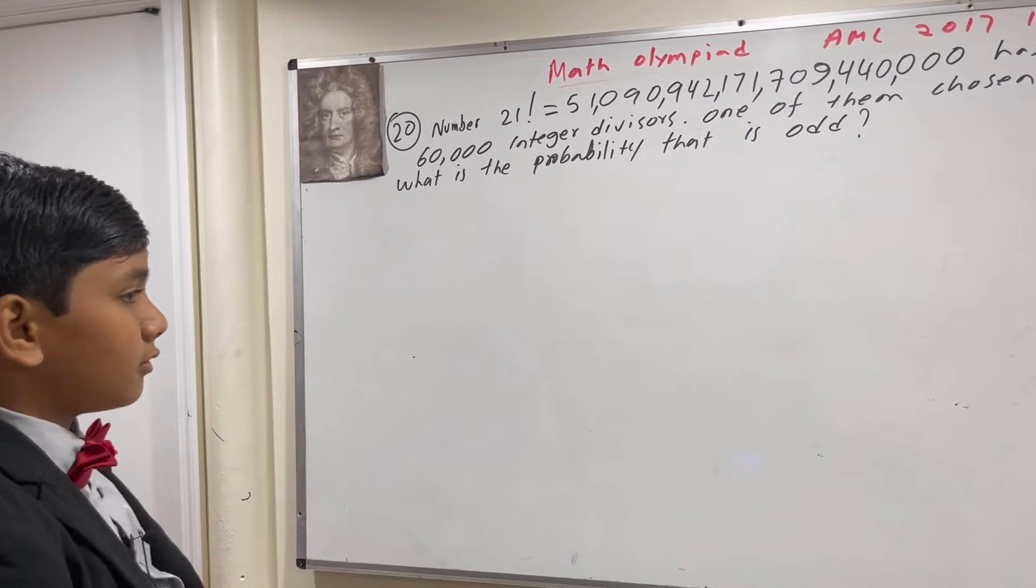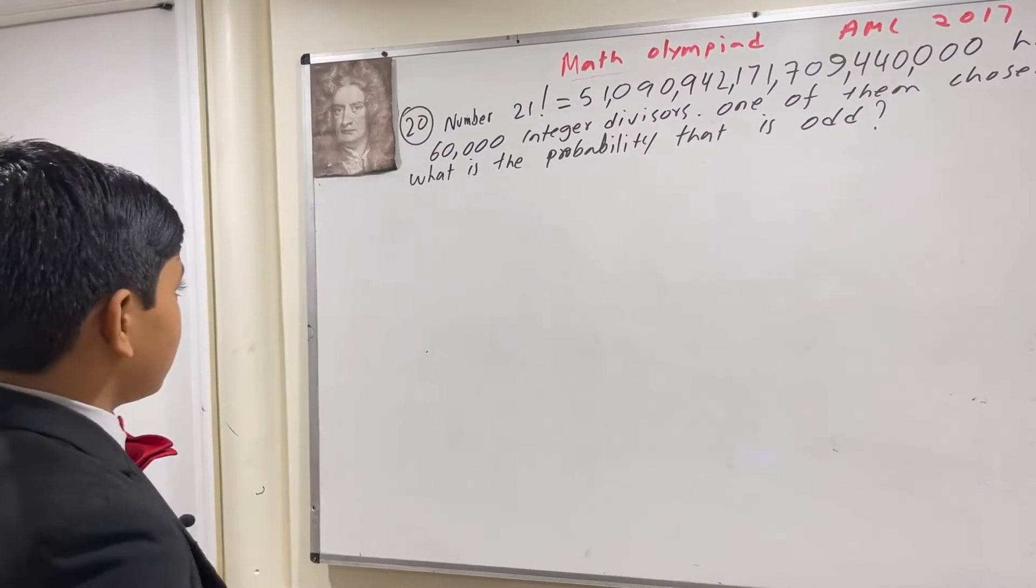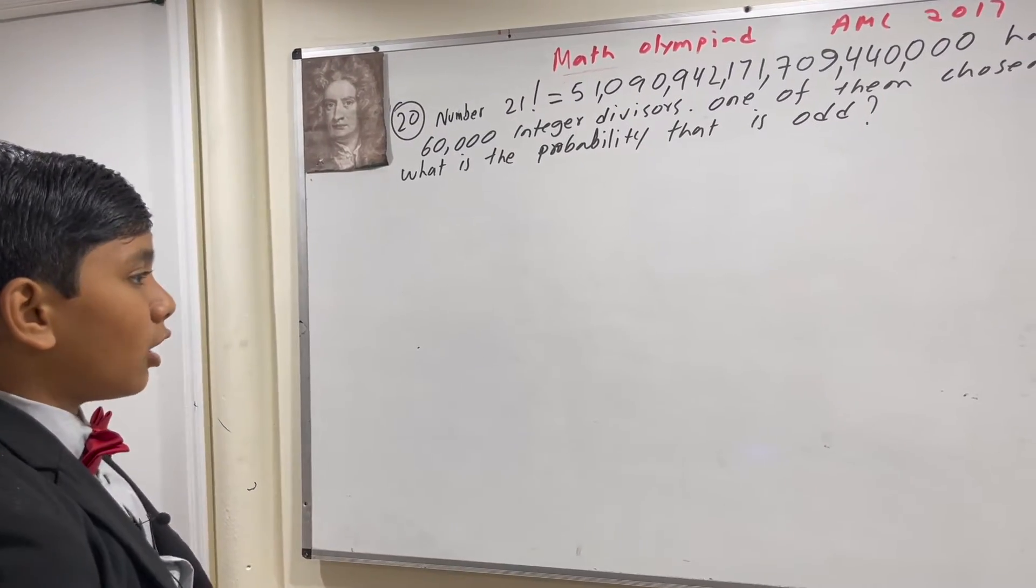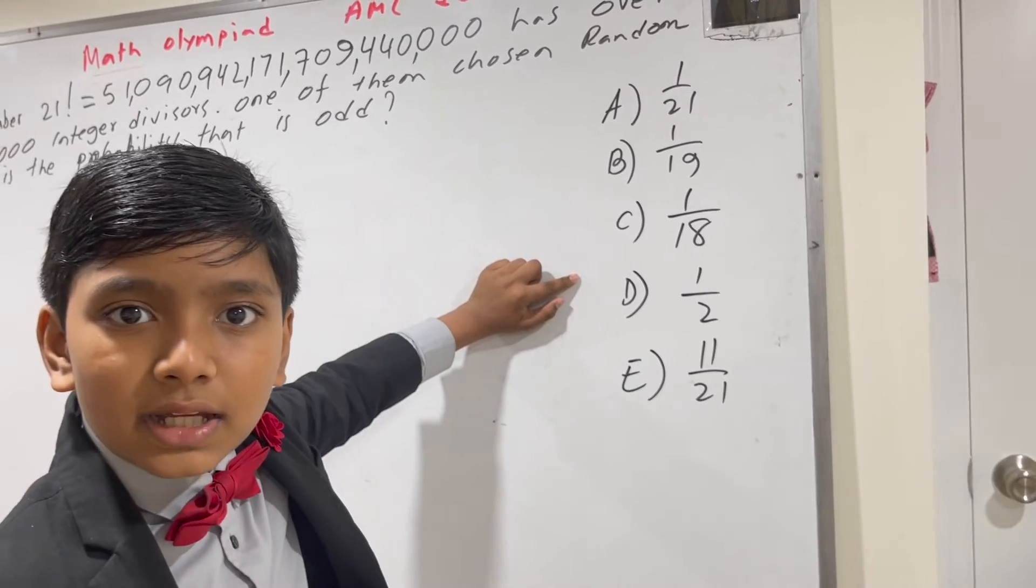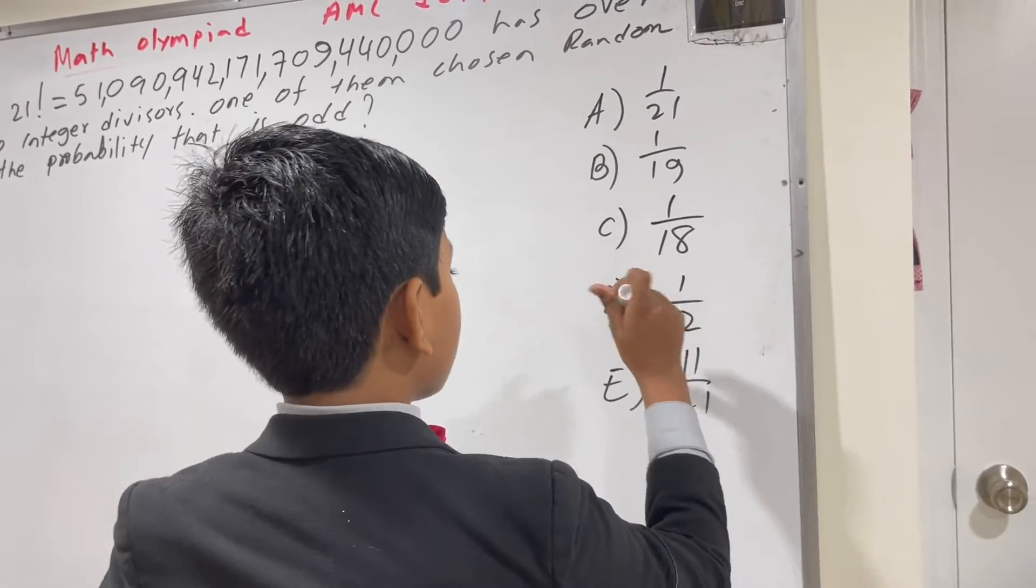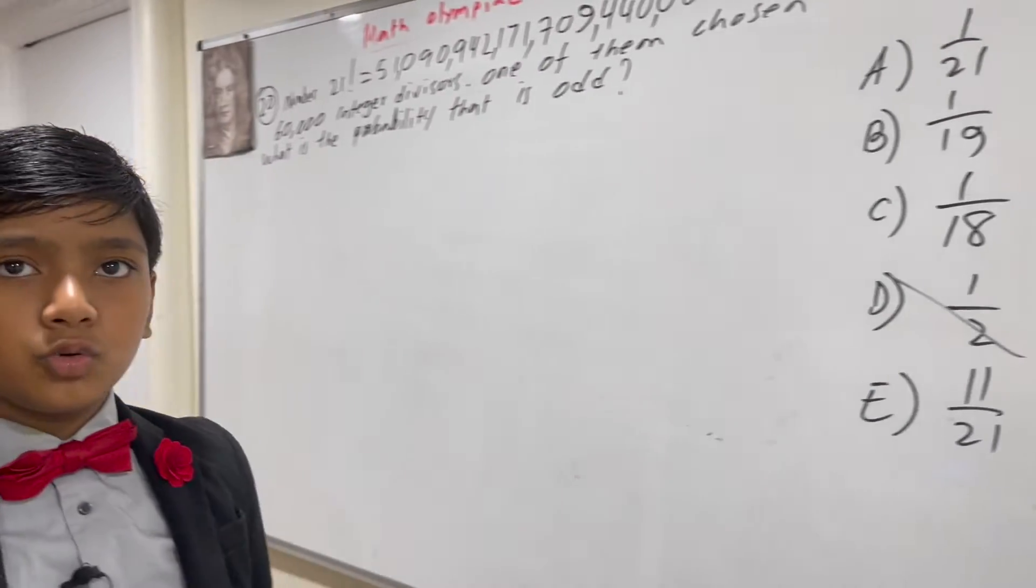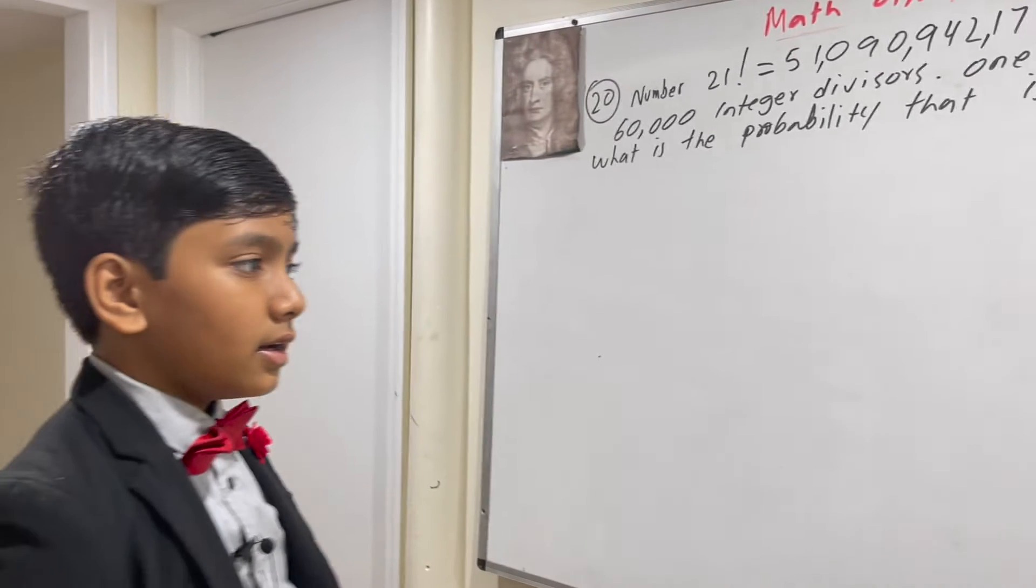First of all, you might think the answer is one-half, but this is nonsense. Why? Because even though there are only two parities, even and odd, a number could have more even than odd divisors, or more odd than even.